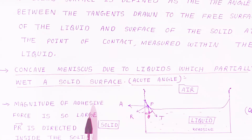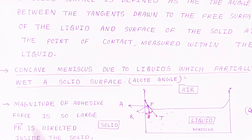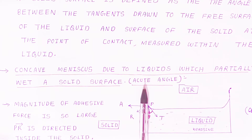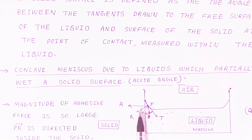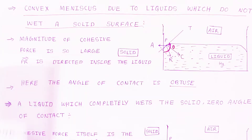Here we are talking about adhesive forces — the molecules present on the surface of the beaker and the liquid molecules. The magnitude of the adhesive force is very large. The resultant PR is directed inside the solid, that is, towards the solid surface. When the resultant is towards the solid surface, it forms a concave meniscus.